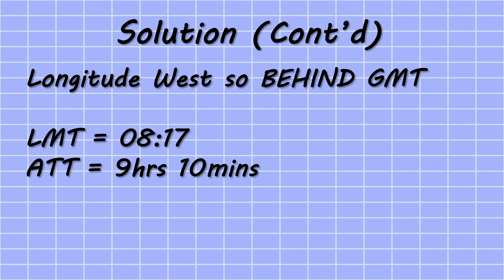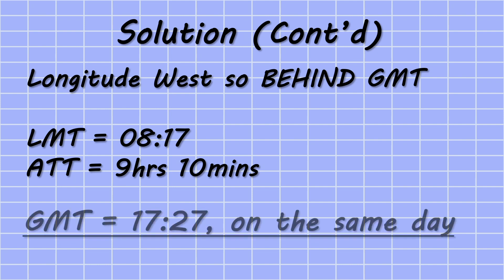To calculate the final value of Greenwich Mean Time, we need to apply our arc to time to our local mean time. As our longitude was west, we are behind GMT and hence would add arc to time to local mean time in order to find the true value of Greenwich Mean Time, which in this case would be 17:27, or 5:27 pm on the same day as local mean time.